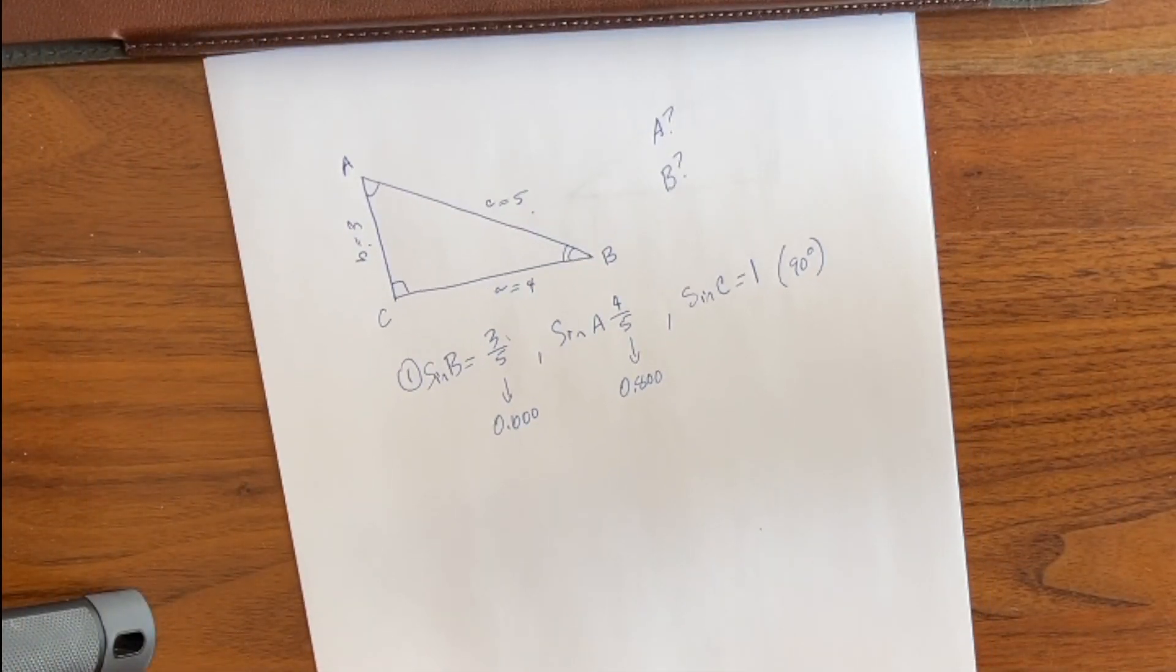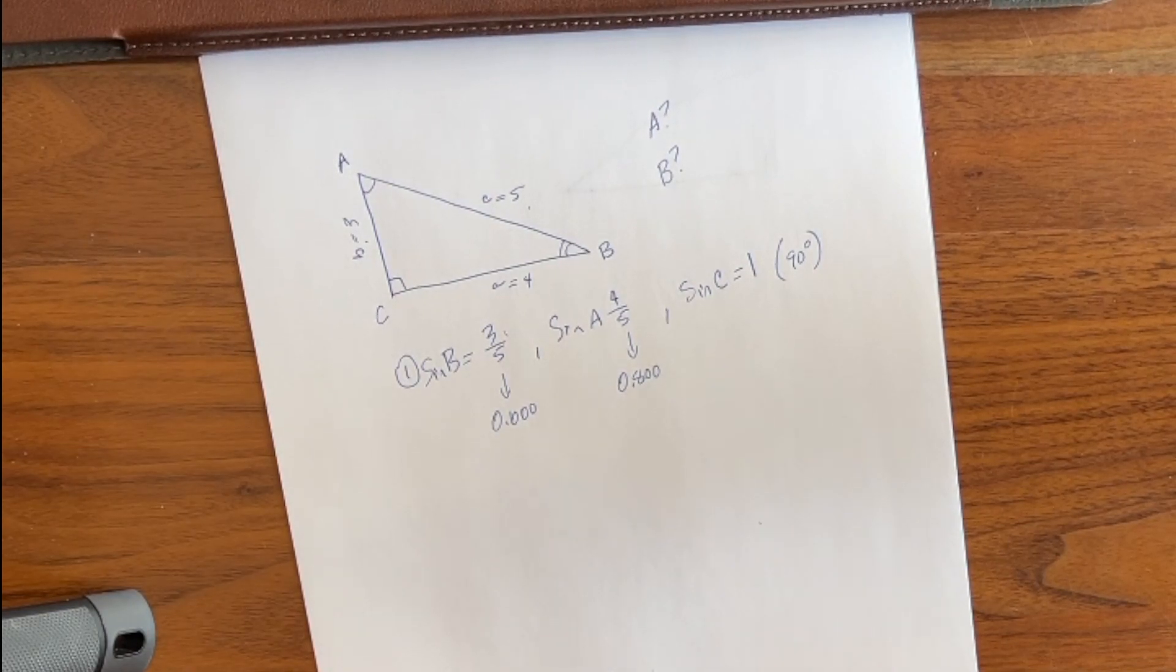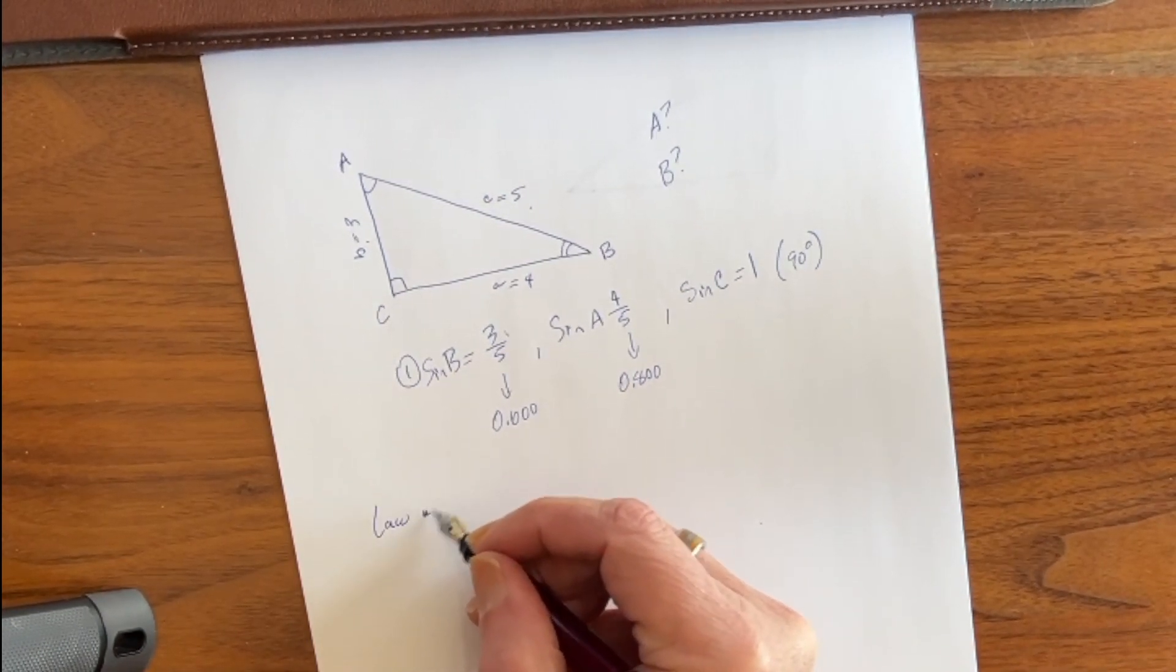Now we can repeat this procedure for angle A, but there's a better way of doing it. Remember our table functions and our proportions from earlier episodes. Let's go ahead and set that up. Now there's a relationship between the sines and the angles of a triangle, and it's called the Law of Sines.